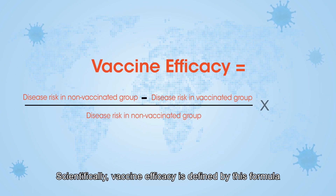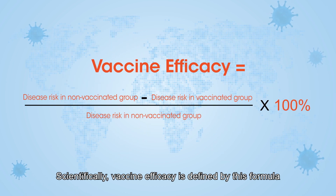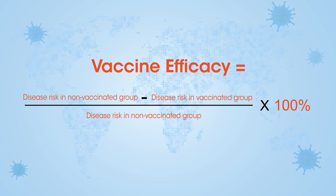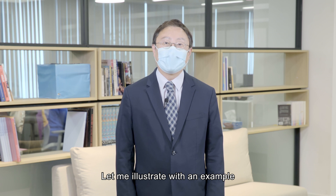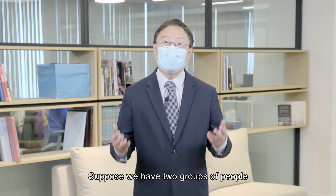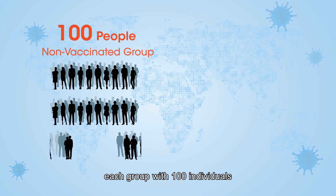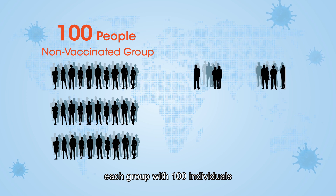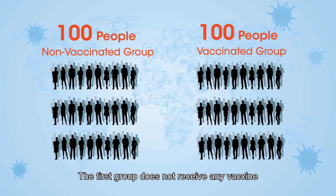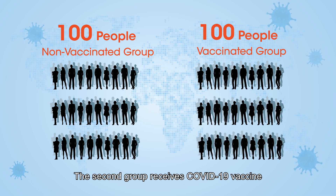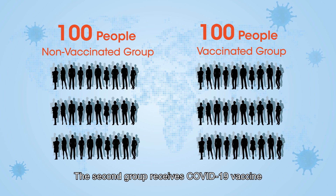Scientifically, vaccine efficacy is defined by this formula. Let me illustrate with an example. Suppose we have two groups of people, each group with 100 individuals. The first group does not receive any vaccine. The second group receives the COVID-19 vaccine.